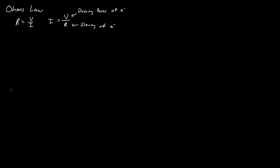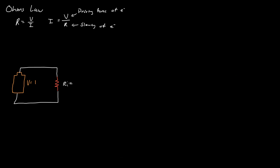So let's say you have a battery with a voltage of one volt. We have a resistor and a conducting wire. If this resistor has a resistance of one ohm, what's the current in this system? By Ohm's Law, the current is equal to the voltage — one volt — divided by one ohm.